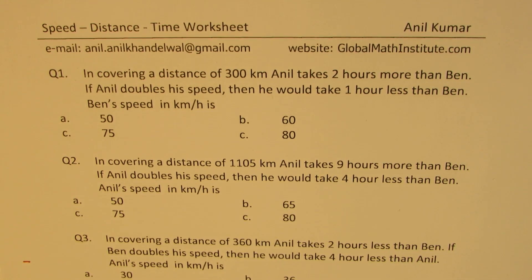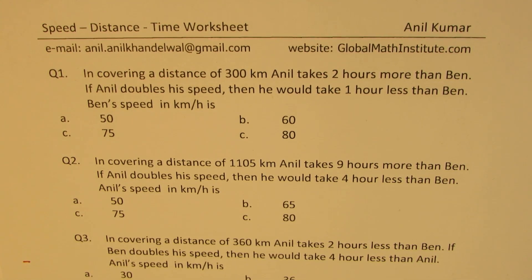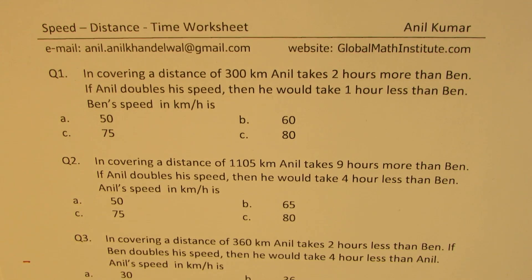The three questions are very similar — they'll have the same strategy, and I hope with that you will get practice to solve such questions. Question number one: in covering a distance of 300 kilometers, Anil takes two hours more than Ben. If Anil doubles his speed, then he would take one hour less than Ben. Ben's speed in kilometers per hour is what? Four choices are given. You can now pause the video, answer this question, and then look into my suggestions.